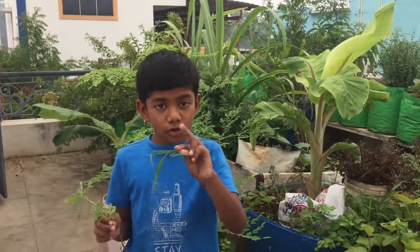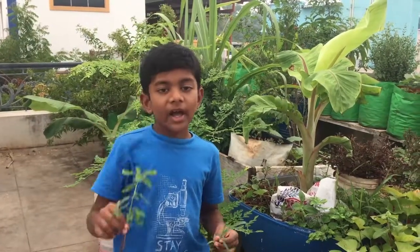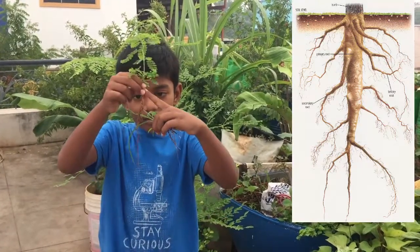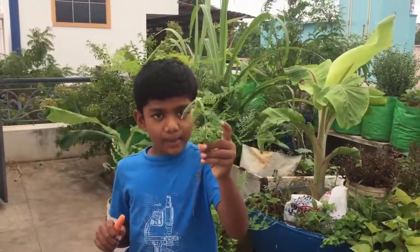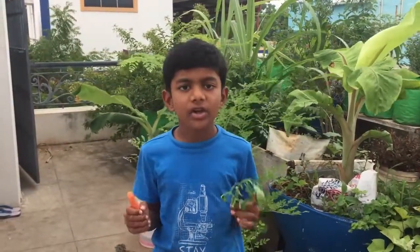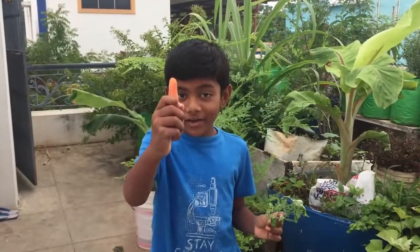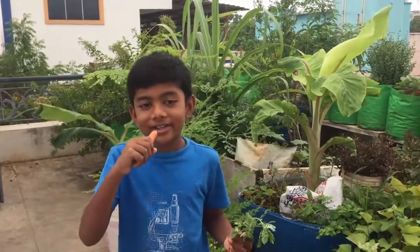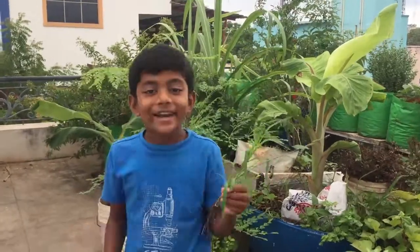First, let's talk about the roots. There are two main types of roots. The first one is taproot and the next one is fibrous root. Taproots have one thick root going to the bottom. Some examples of taproot are carrots, beans, radishes, mustard, turnips, and beetroot.